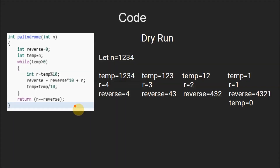This is the code for the problem. We have a function palindrome that will return 1 if the number is palindrome and 0 if it is not. The variable n is our original number. We have a variable reverse initialized to 0, which will store the reversed value of n. We also have another variable temp that is initialized with n.